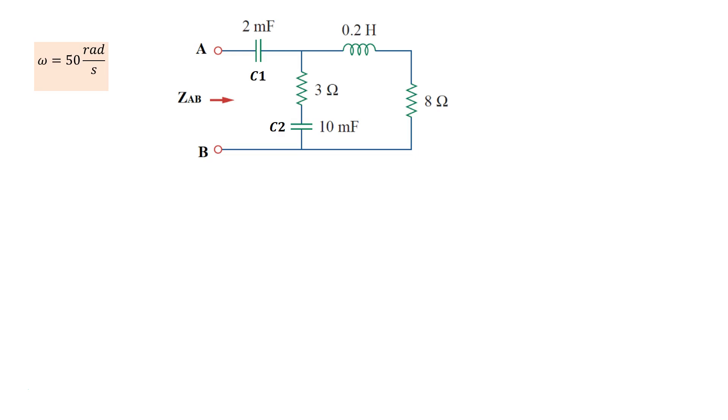We'll start out by converting the capacitors and the inductors to their respective impedances. The impedance of a capacitor is given by 1 over jωc, and 1 over j can also be written as -j, so we can write this as -j over ωc.